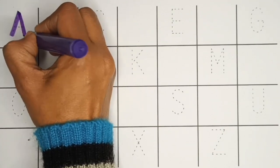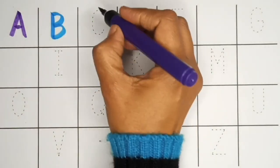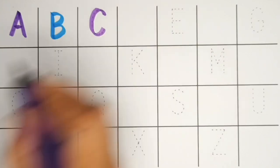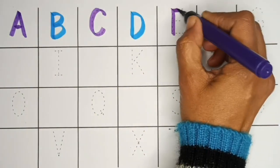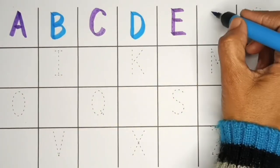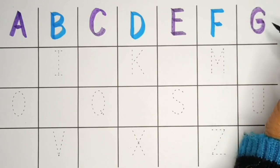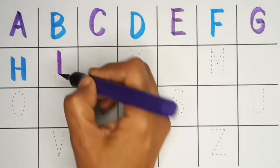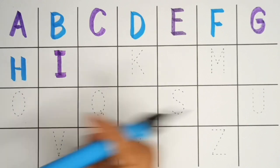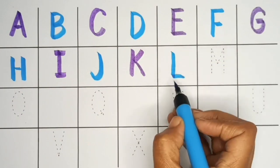A, A for apple. B, B for ball. C, C for cat. D, D for dog. E, E for elephant. F, F for fish. G, G for grapes. H, H for hen. I, I for ice cream. J, J for jug. K, K for kite. L, L for lion.